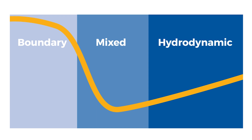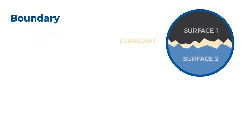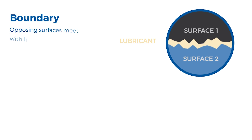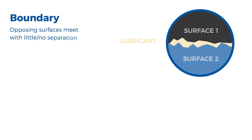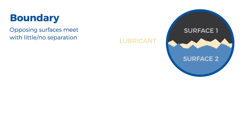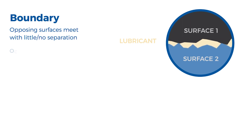During boundary lubrication, opposing surfaces meet with little or no oil film separation. In this regime, damage is prevented by protective additives that promote sliding rather than welding of surface asperities. This regime typically occurs at low speeds.